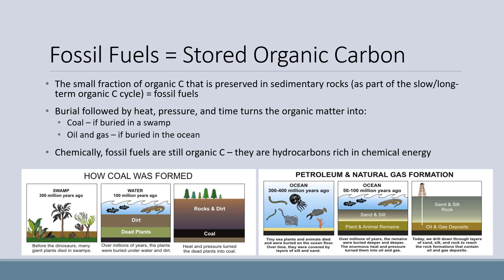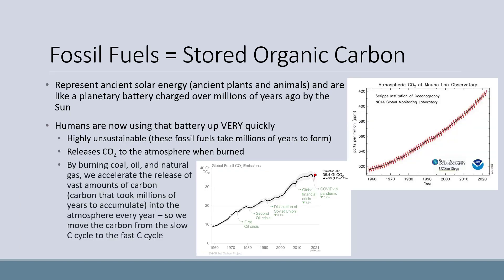So what we dig up and burn is gone forever on timescales relevant to us, and we reintroduce that carbon back into the atmosphere. Fossil fuels represent ancient solar energy stored as organic matter — they're like a planetary battery charged over millions of years by the sun, but humans are now using that battery up very quickly. Fossil fuels also release CO2 to the atmosphere when burned. By burning coal, oil, and natural gas, we accelerate the release of vast amounts of carbon — carbon that took millions of years to accumulate — into the atmosphere every year. So we move the carbon from the slow carbon cycle to the fast carbon cycle.